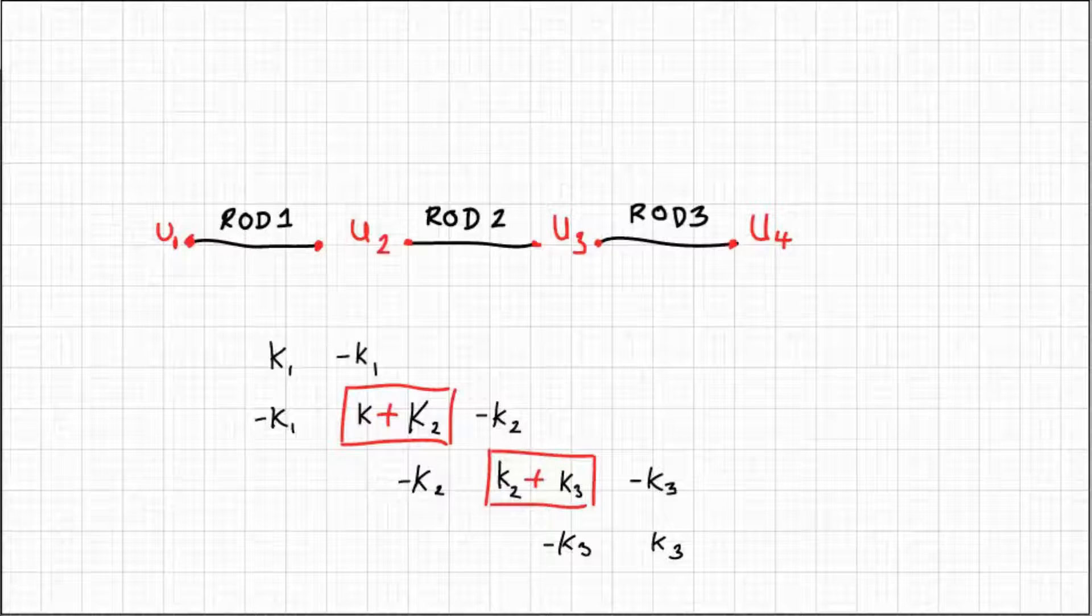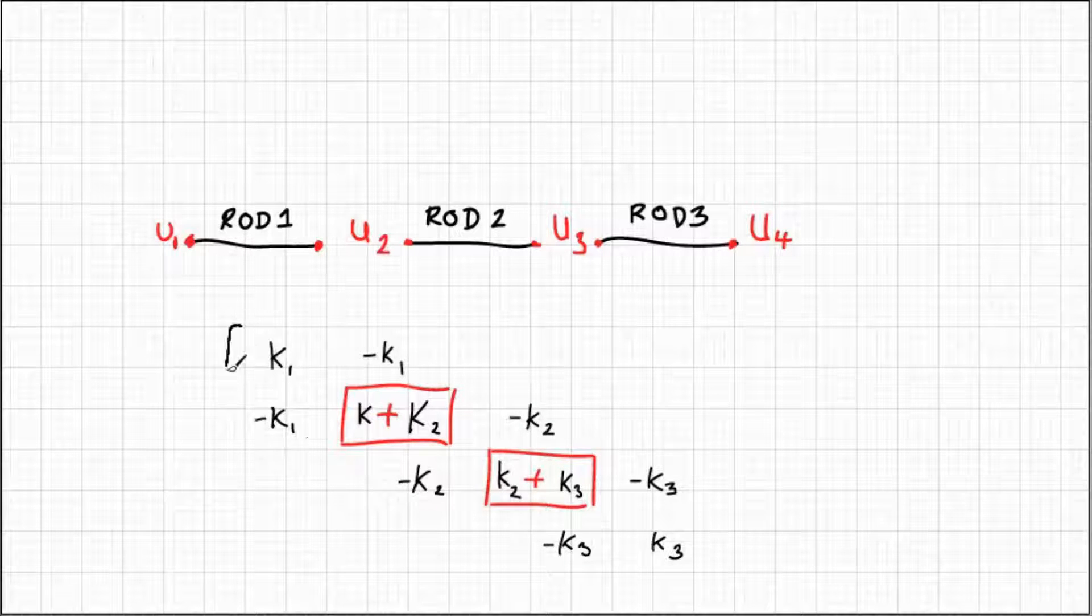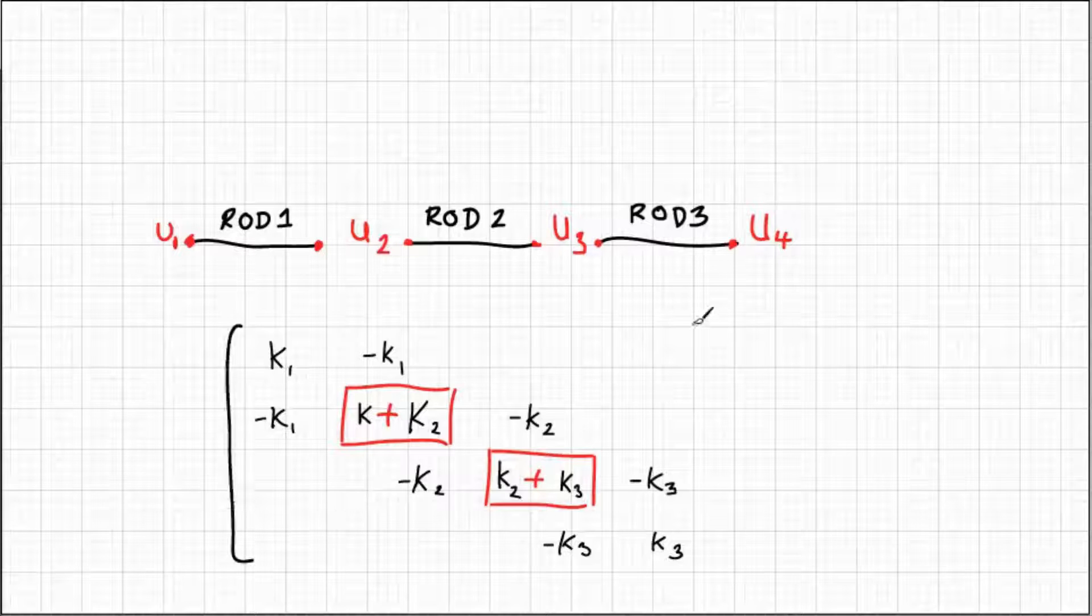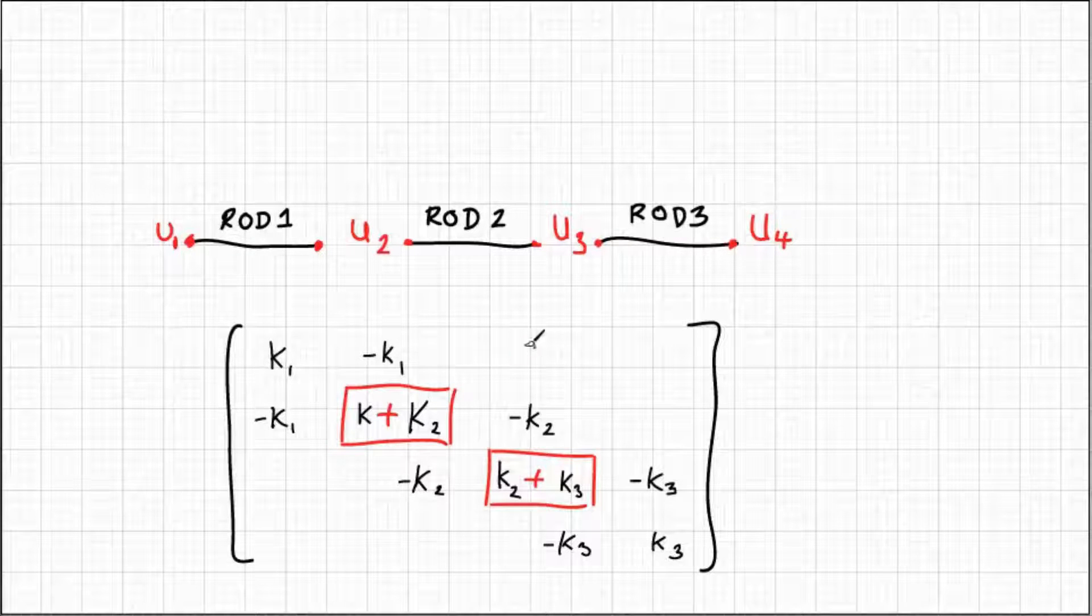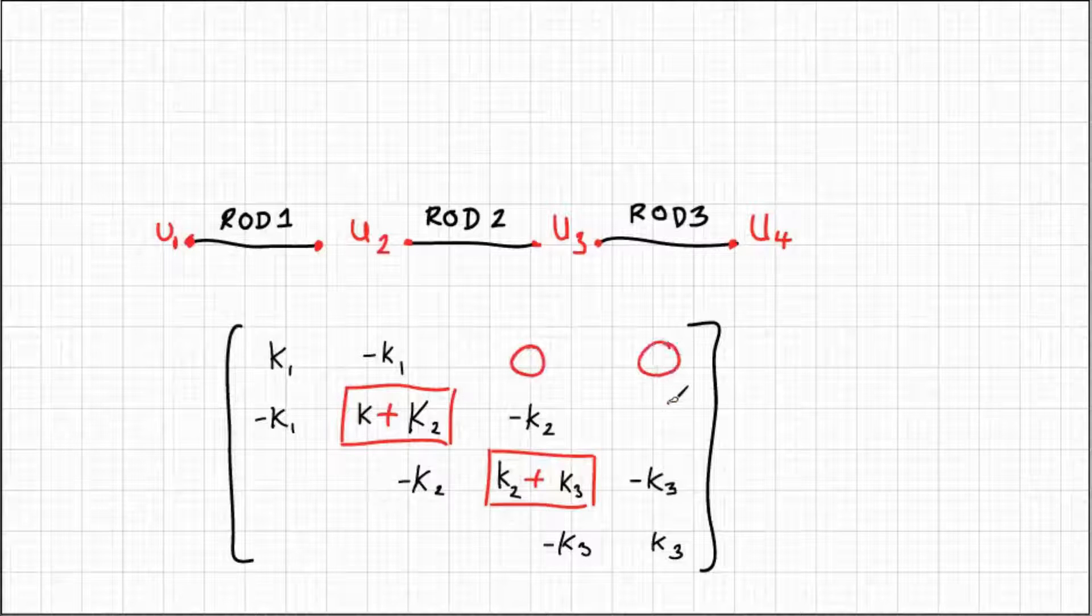Those two stiffness terms combine to give that full assembly. The other terms in this assembled matrix have zero stiffness, so we just populate the rest of the matrix with zeros as appropriate.